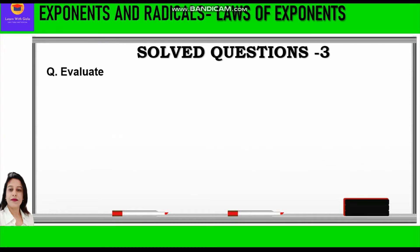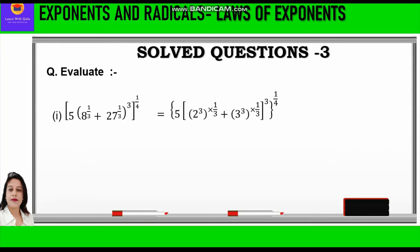Now let's get started with our first question: 5 in bracket, 8 raised to power 1 by 3 plus 27 raised to power 1 by 3, whole raised to the cube, then big brackets, whole raised to power 1 by 4. We know that 8 is 2 cubed and 27 is 3 cubed, so we write 5 in bracket, 2 cube into 1 by 3 plus 3 cube into 1 by 3, big brackets close, then raised to 3, then whole raised to power 1 by 4.